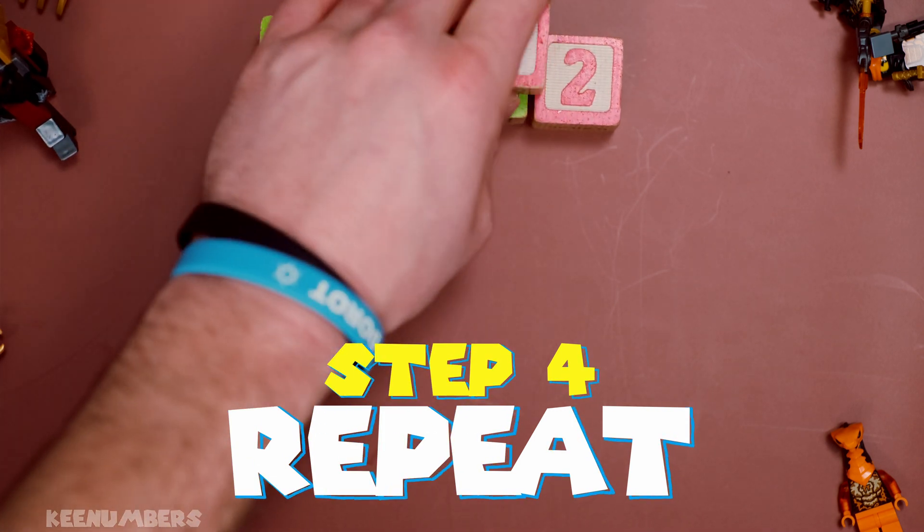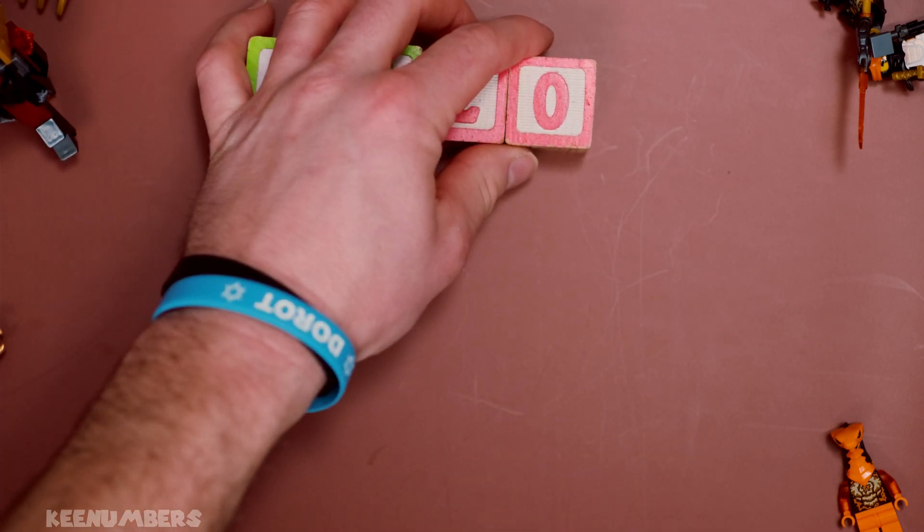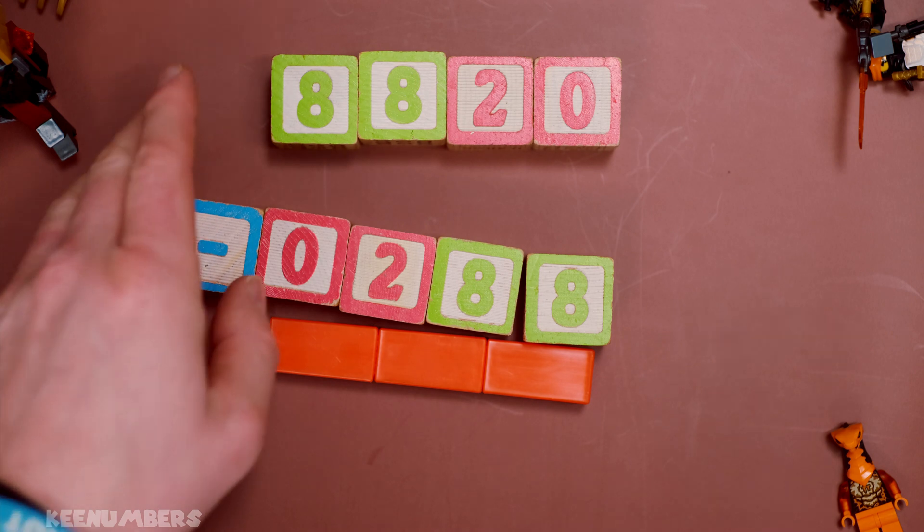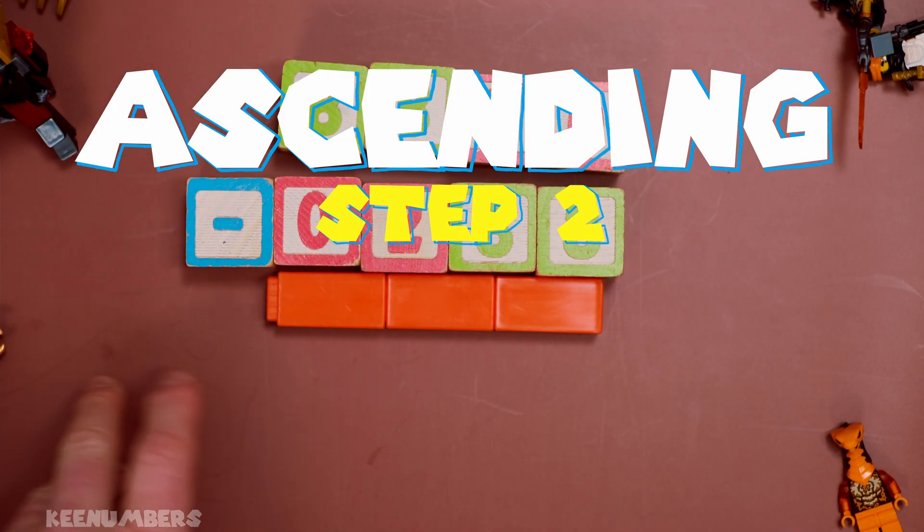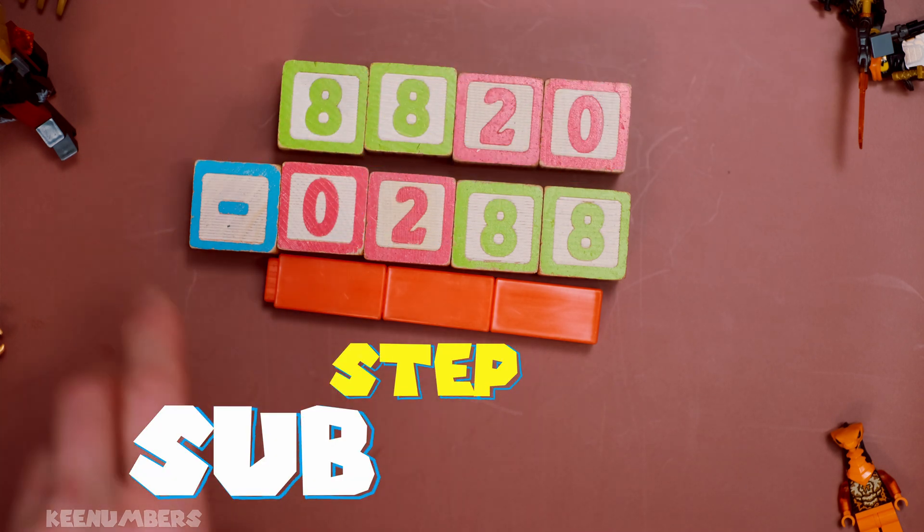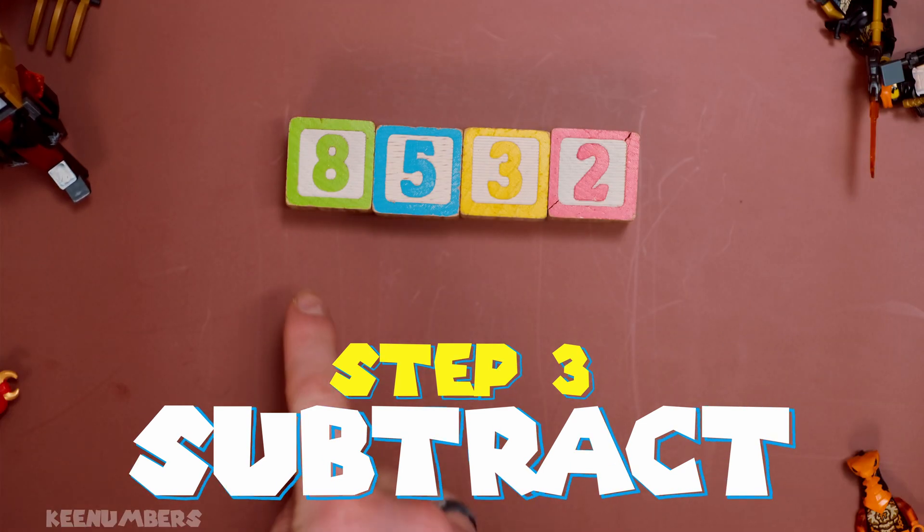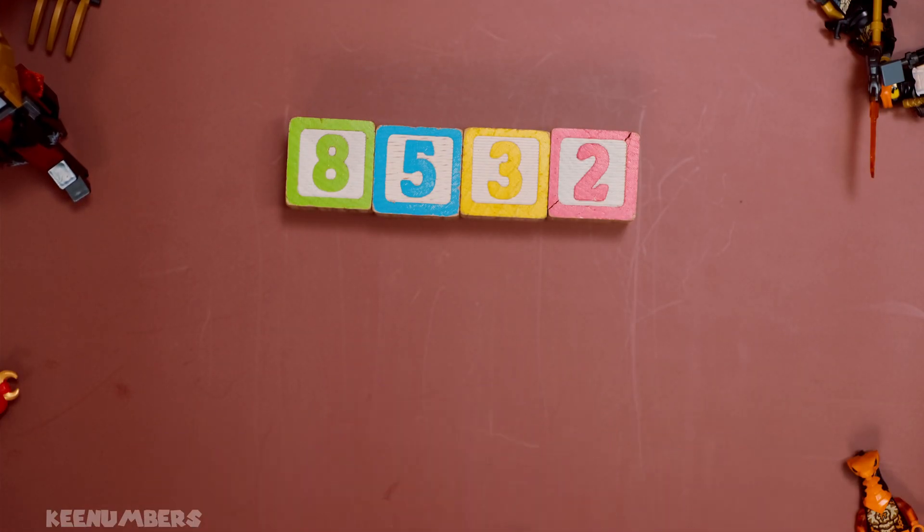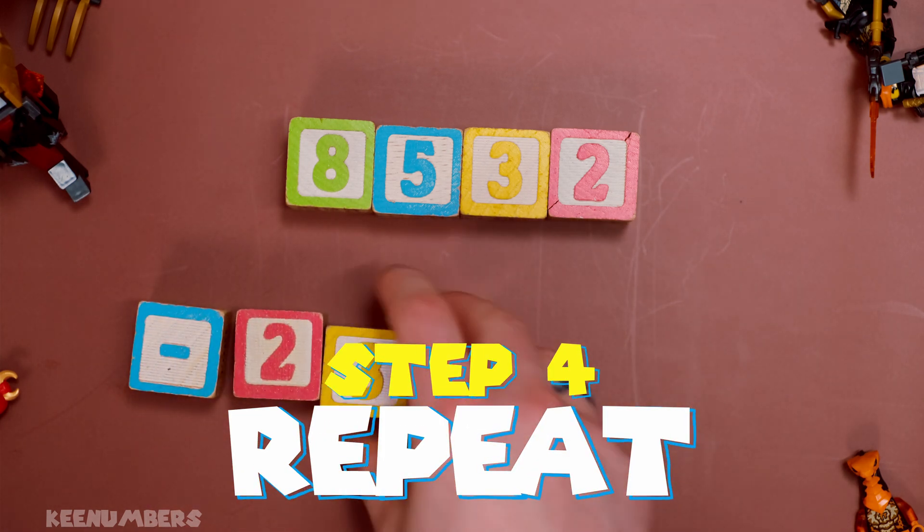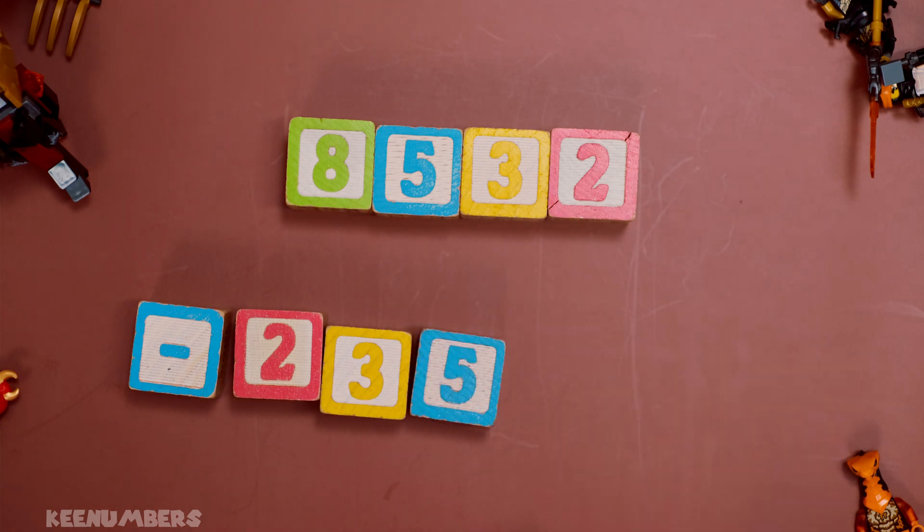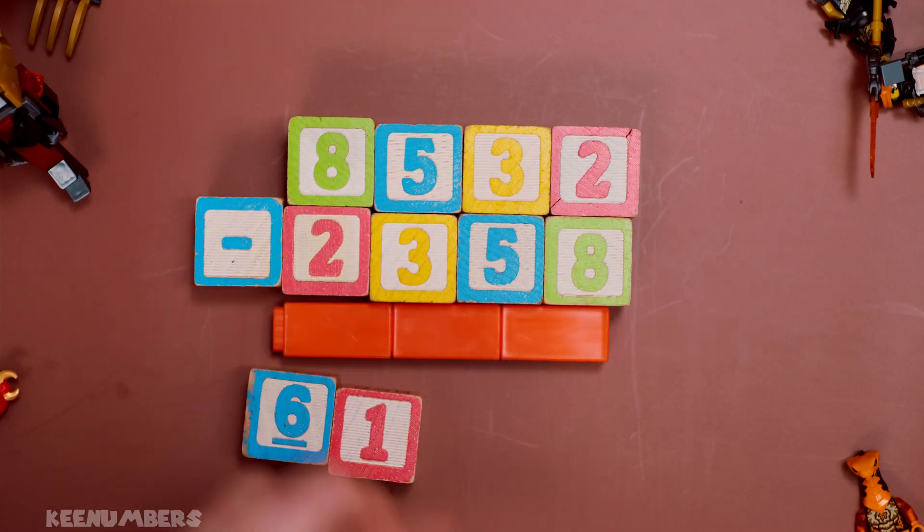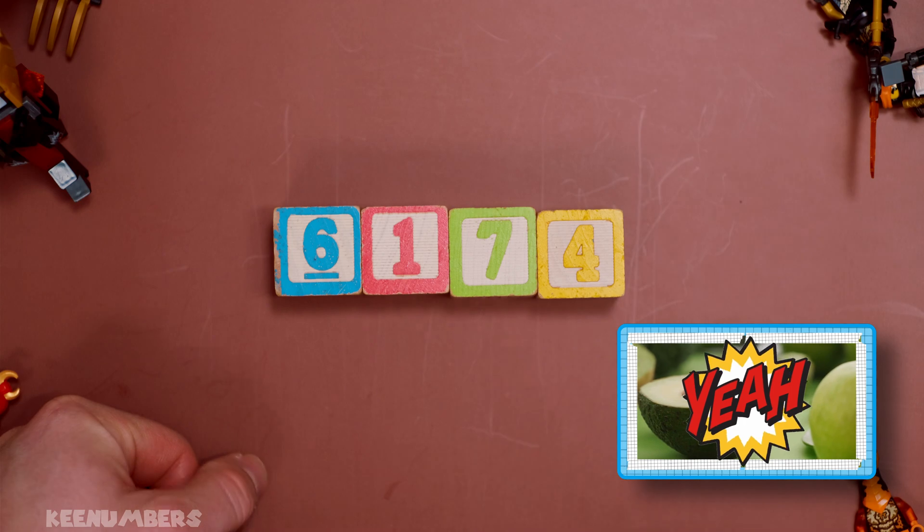We're going to put this into descending order. So that'd be 8820. You're going to subtract the number in ascending order, 0288. You will get to Kaprekar's constant as long as you follow the rules where it's a four digit number and every digit has to be unique. So if you do that, you're going to get 8,532. Hey, that's already in descending order. So that's going to make the next step even easier. You're going to do two, you're going to do three, you're going to do a good old five, and then you're going to do a good old eight. And when you do that, bada bing, bada boom, guess what? You get back to 6,174. Kaprekar's constant.